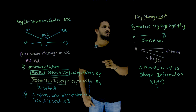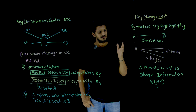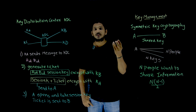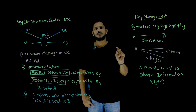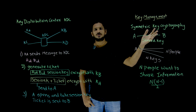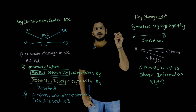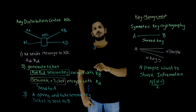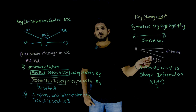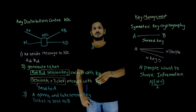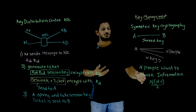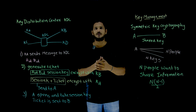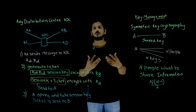In our previous classes we discussed about symmetric key cryptography technique. Suppose A and B want to exchange some information — they need a secret key between A and B, which we call a shared key. Suppose A wants to exchange information with n different people, so A needs n different shared keys. Similarly, if n different people want to share information among them, how many different keys need to be generated? n multiplied by n minus 1 divided by 2 keys need to be generated.